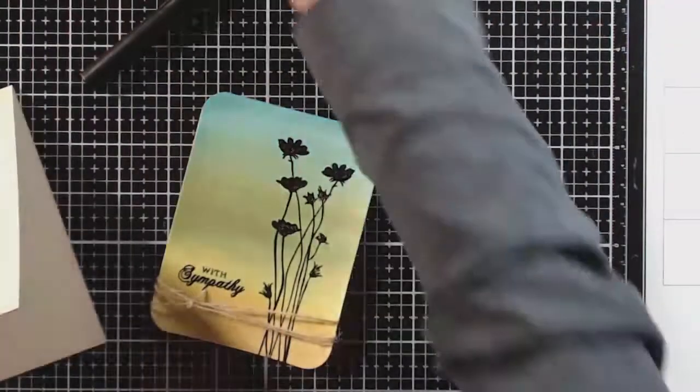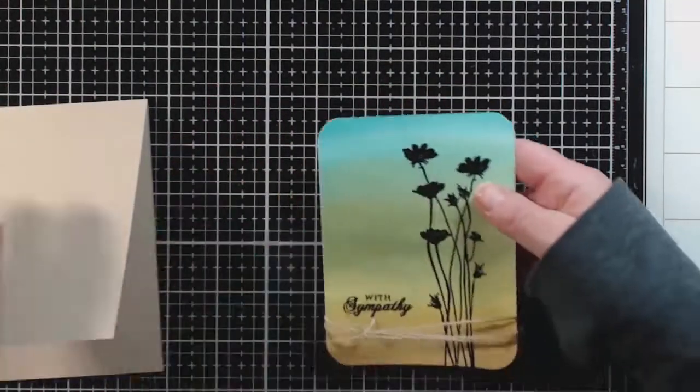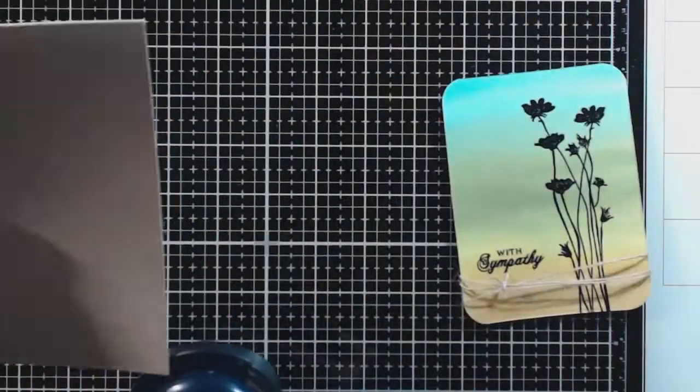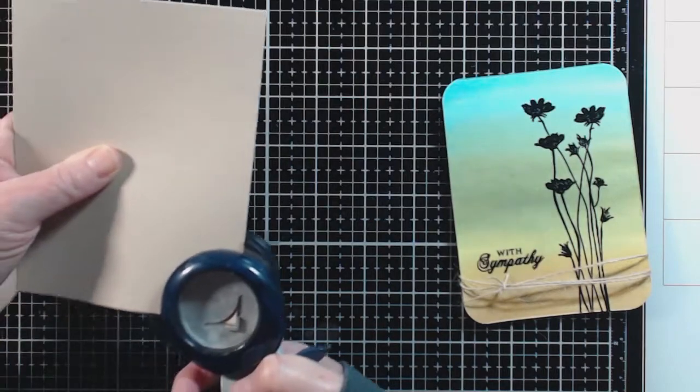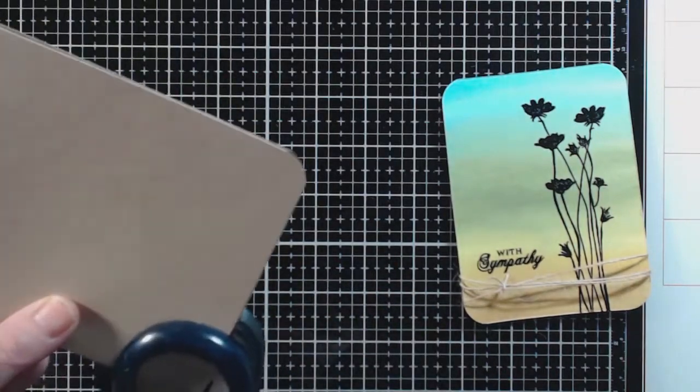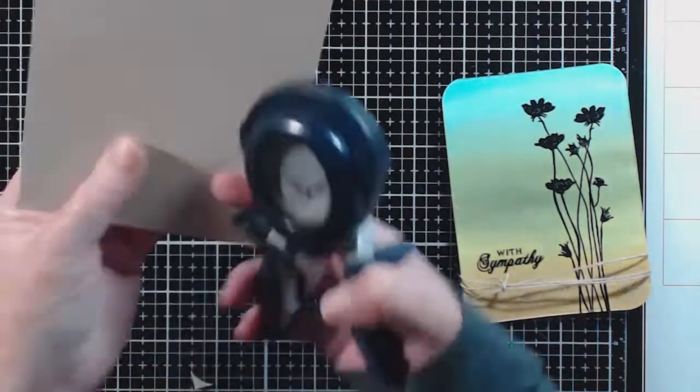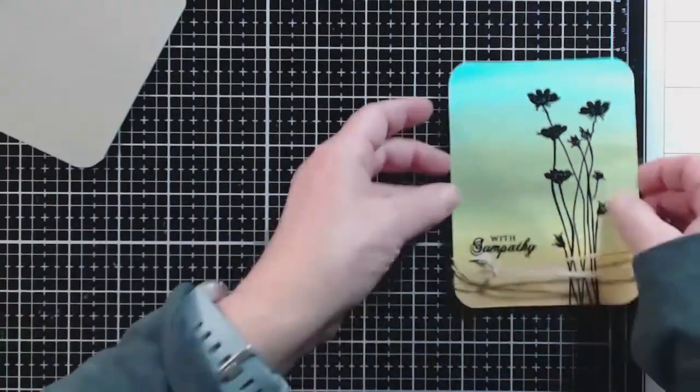The cardstock I'm using as my base is Neenah 100 pound Desert Storm cardstock. I think they're changing the name to Environment. Here I'm rounding the corner so that it works with my rounded corners on the image itself.